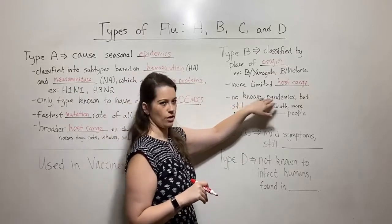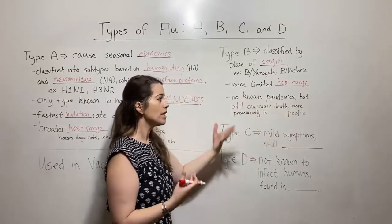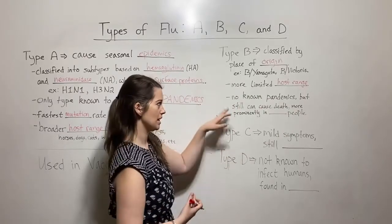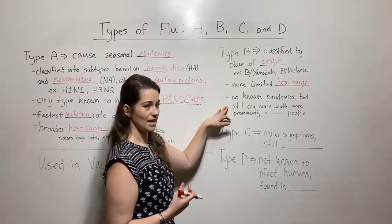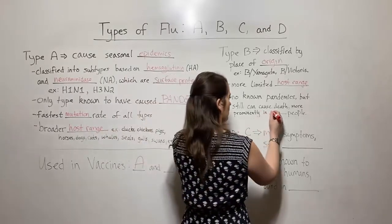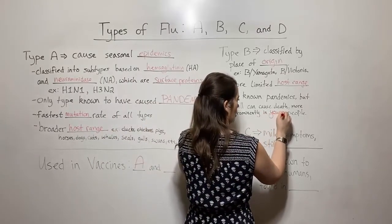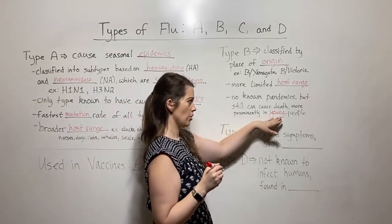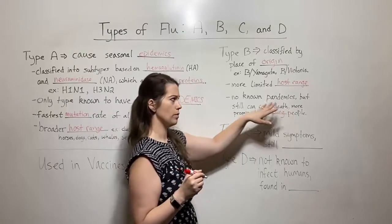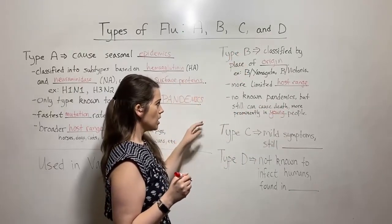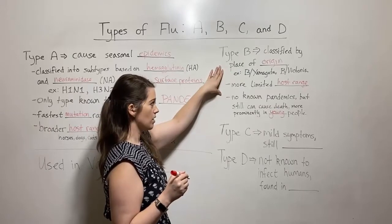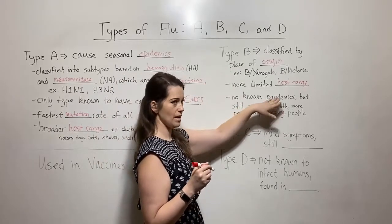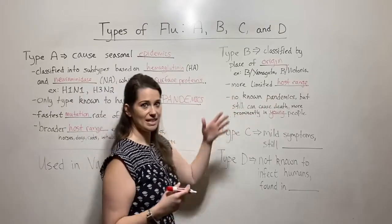And this is probably why there are no known pandemics. So that's not to say that it couldn't cause a pandemic, but it hasn't historically since we've been able to keep these records. However, it can still cause death. And it does tend to be a little bit more dangerous for young people. So sometimes when you have young people get very sick or die from the flu, it tends to more often be this type B strain. And the type B strain, we know that even though it doesn't cause pandemics, it can still cause epidemics. It still tends to be seasonal.